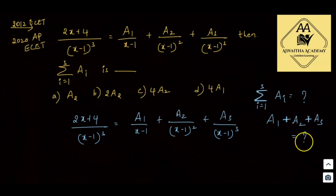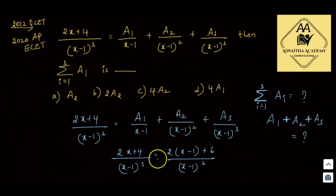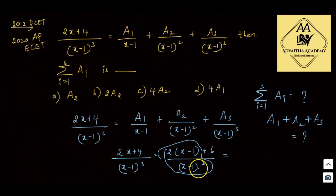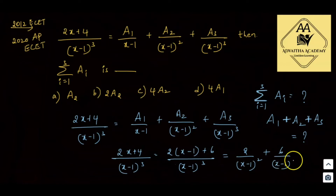To solve this, we use a shortcut. Rewrite 2x + 4 as 2(x - 1) + 6, so the expression becomes [2(x - 1) + 6]/(x - 1)³. Splitting: the first term gives 2/(x - 1)², since (x - 1) in the numerator cancels one power in the denominator. The second term gives 6/(x - 1)³.